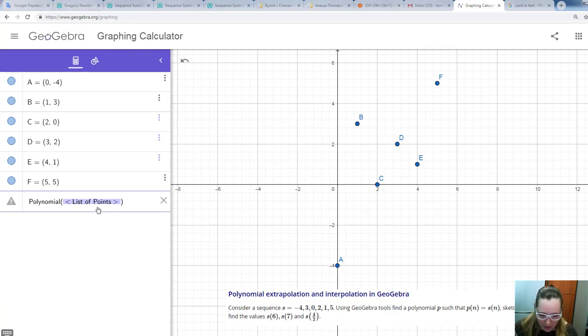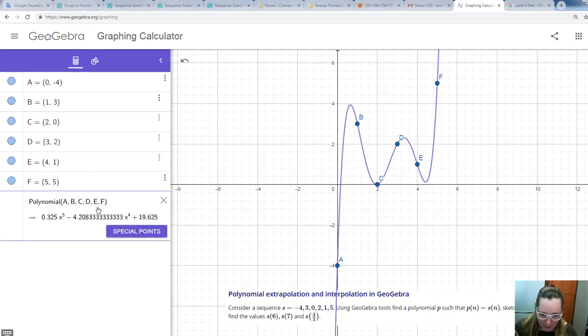So we type here A, B, C, D, E, F. And see, the polynomial is constructed.